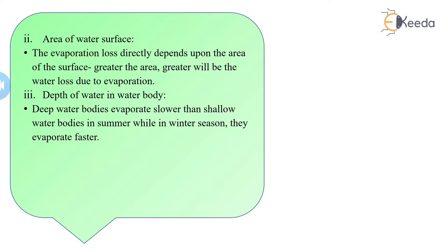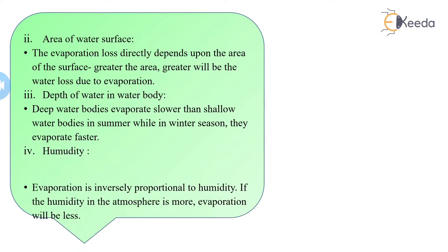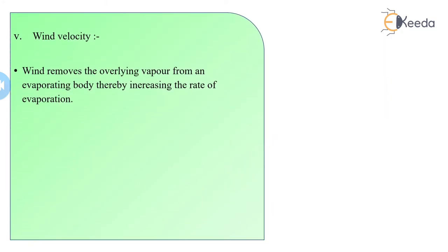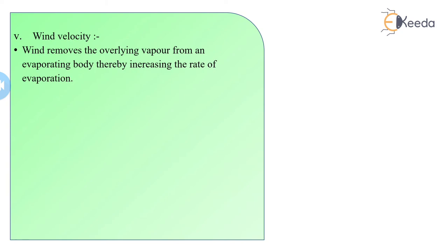Next factor is humidity. Evaporation is inversely proportional to humidity. If the humidity in the atmosphere is more, evaporation will be less. Wind velocity: wind removes the overlaying vapor from an evaporating body, thereby increasing the rate of evaporation. However, high wind speed may not necessarily remove vapor from a smaller water body.